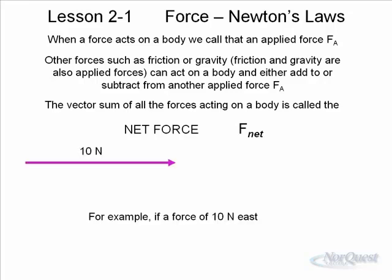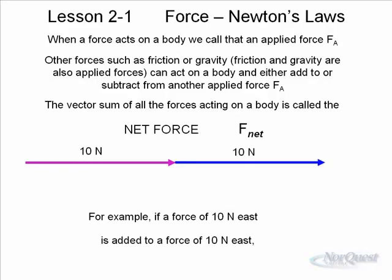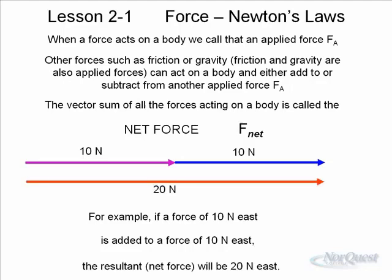For example, if a force of 10 Newtons east acted on a body, and then you added another 10 Newtons in the same direction, you would get a net force, or resultant, of 20 Newtons east. Very simple. You add one vector to the other, and you get a resultant of 20.